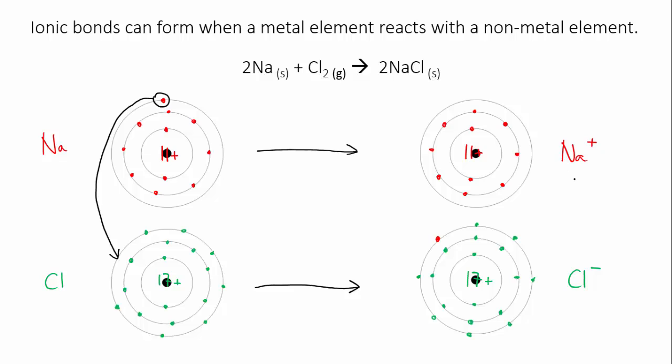Each atom has become an ion with its preferred valence. Notice that the sodium has become smaller, its outer shell is now the second level, and the chloride has become slightly bigger because it has an extra electron.